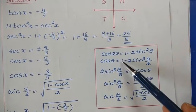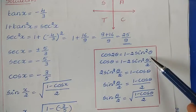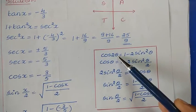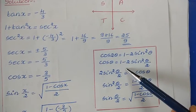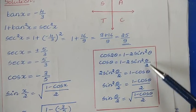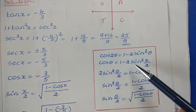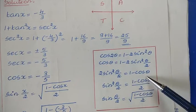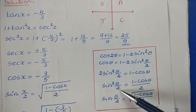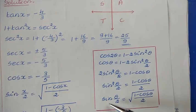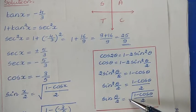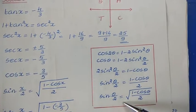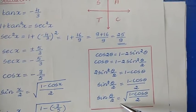The formula cos 2θ = 1 − 2 sin²θ. In place of 2θ, put θ, so it becomes cos θ = 1 − 2 sin²(θ/2). Rearranging: 2 sin²(θ/2) = 1 − cos θ, so sin²(θ/2) = (1 − cos θ)/2, and therefore sin(θ/2) = √((1 − cos θ)/2).